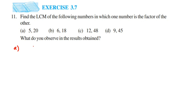I'm going to find the LCM by the division method — we're going to divide the numbers together with a prime number. So take the numbers 5 and 20. Let's start dividing with prime numbers. The smallest prime number is 2, so I want to go in ascending order: first check 2, then 3, then 5, and so on.